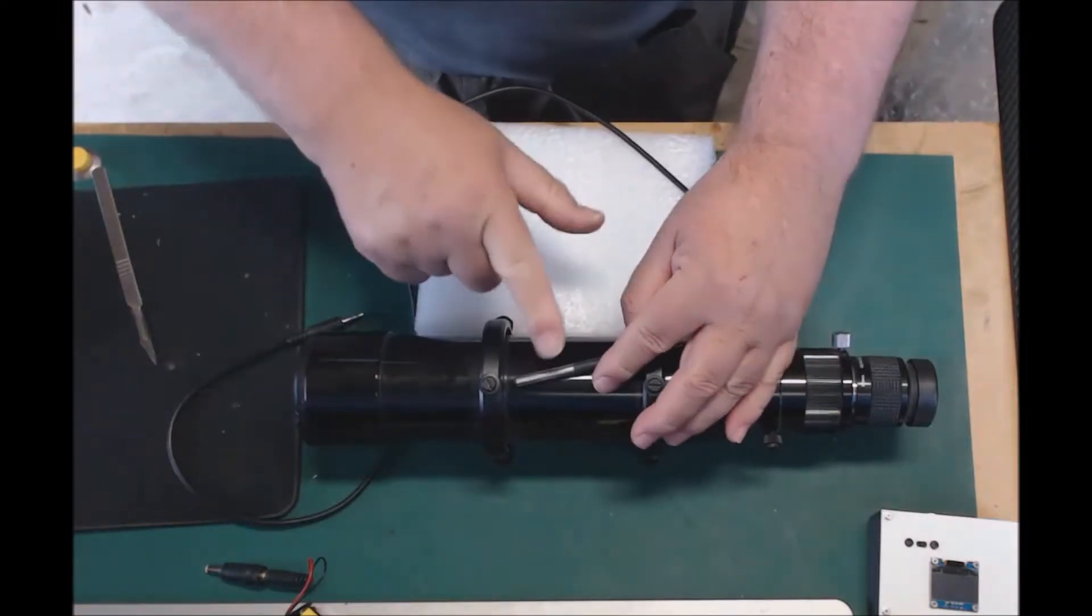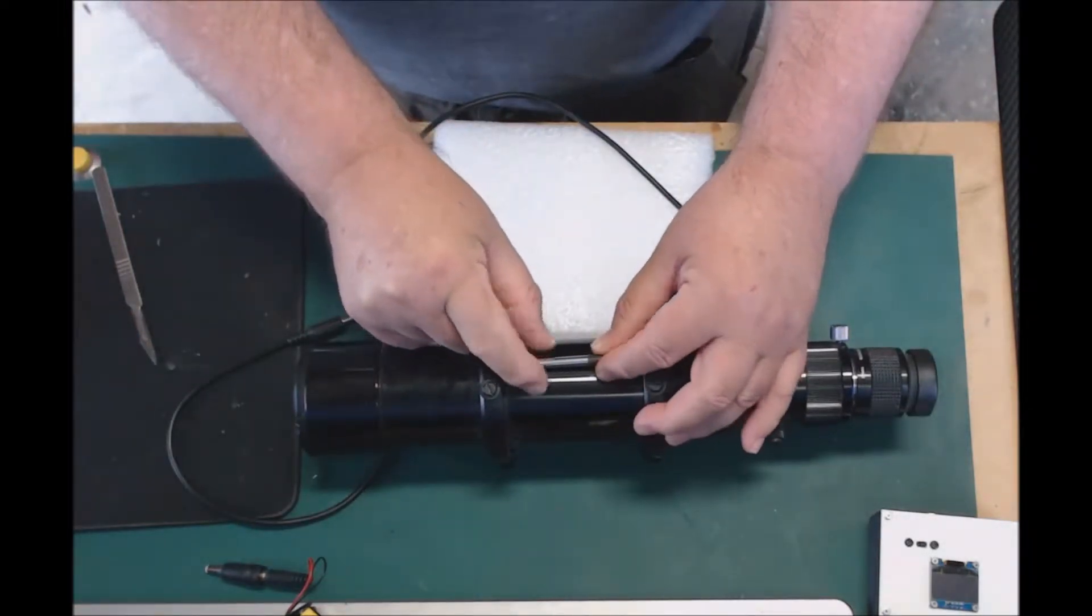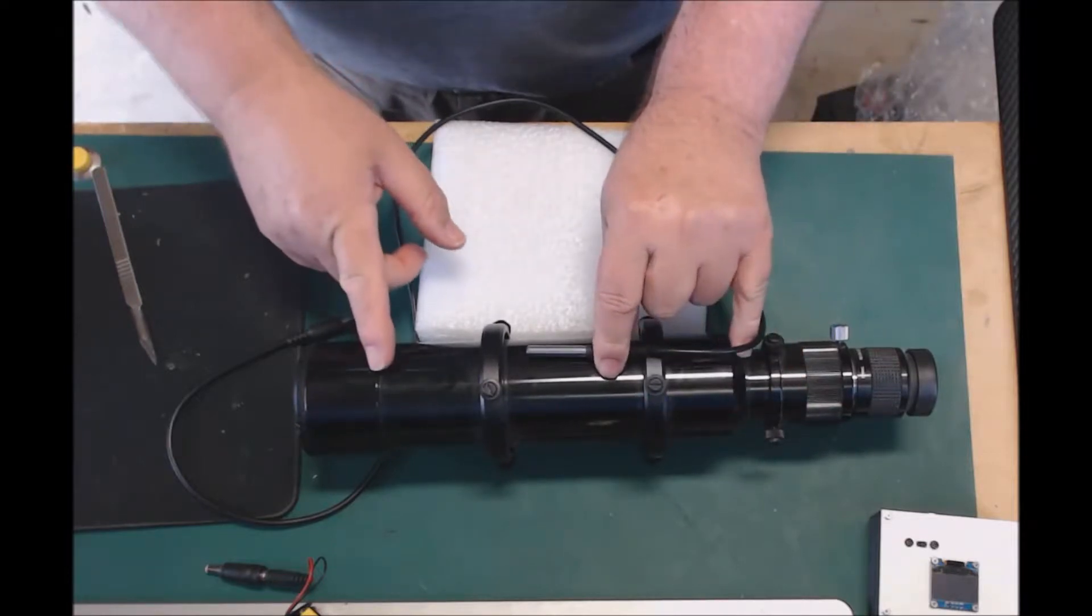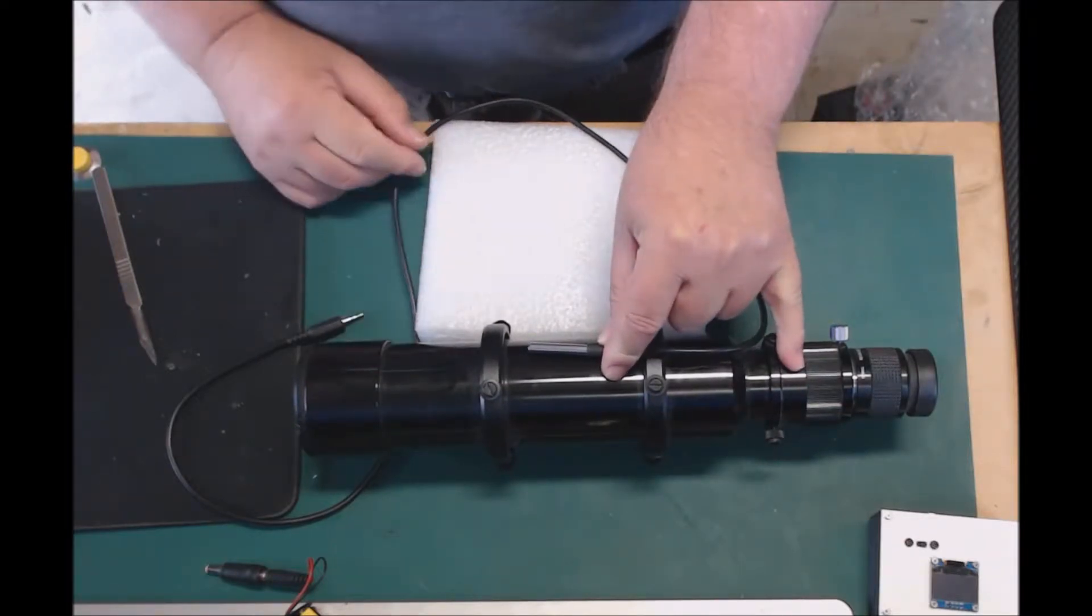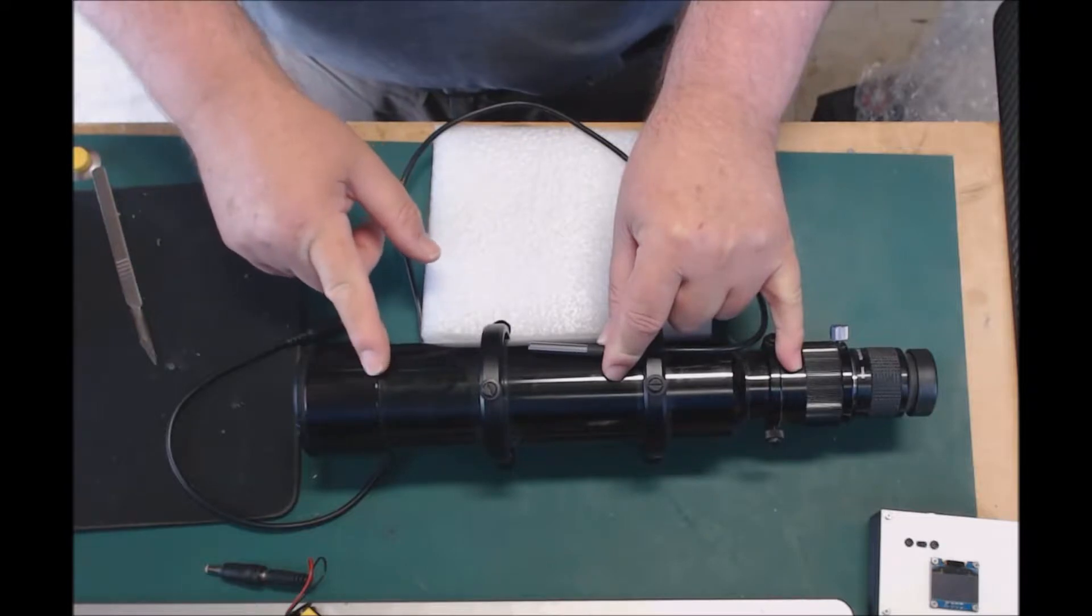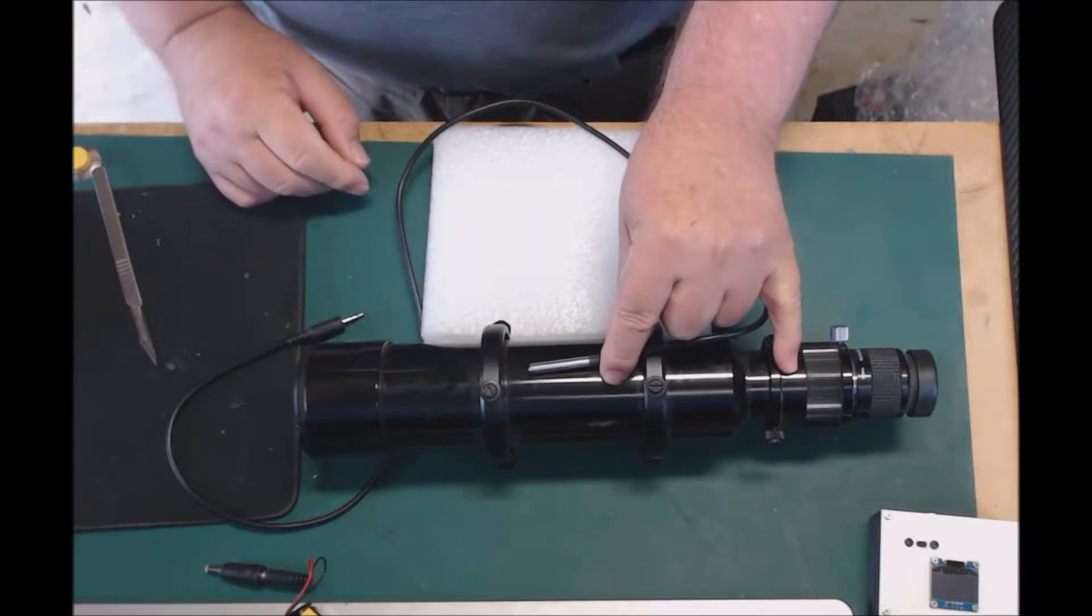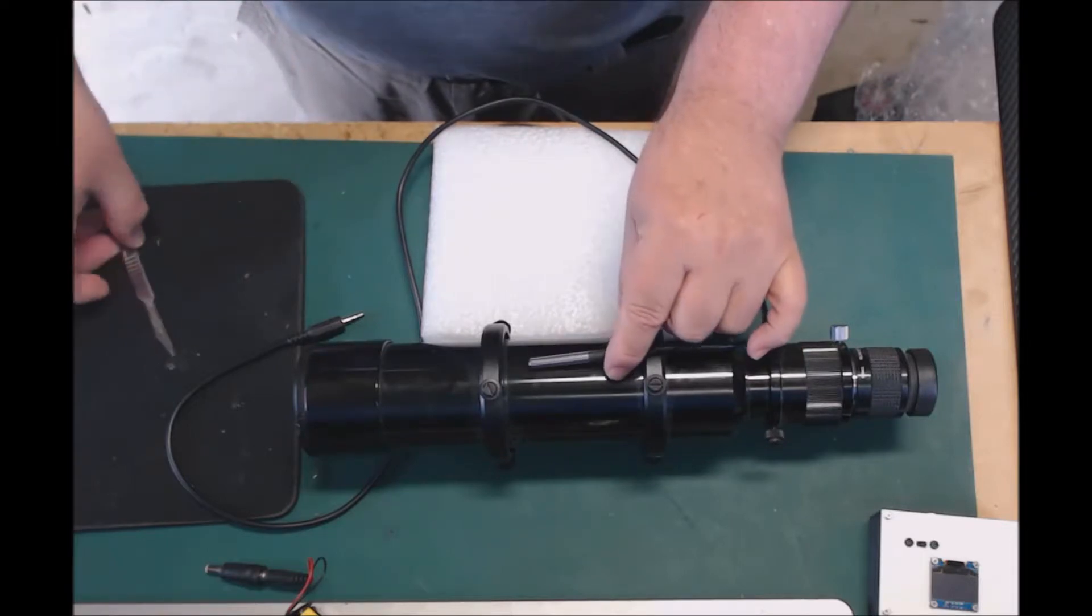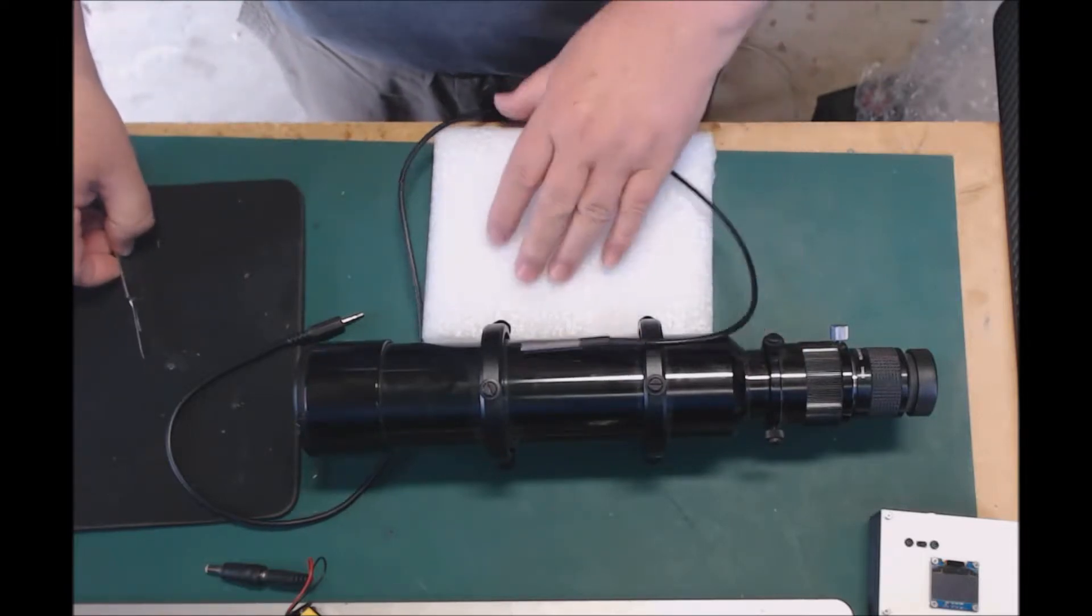So what we want to do is position the temperature probe somewhere on the tube. Ideally, if we put it sort of halfway between the focuser and the optics, that's probably a good position. So we need to find some way to mount this, and I've got some little packing foam here.